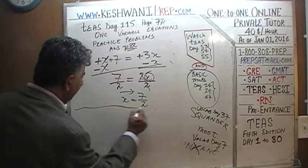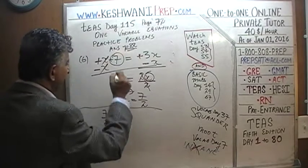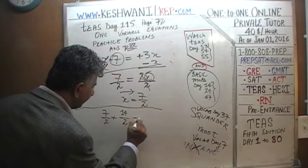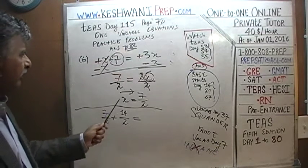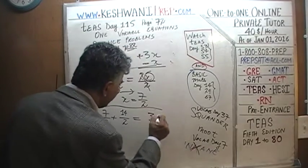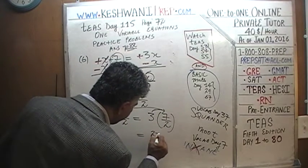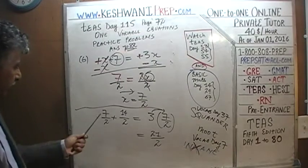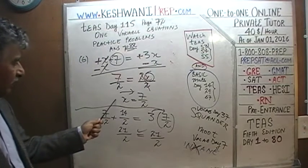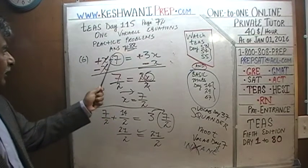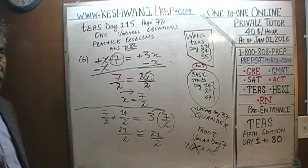Let's verify — x equals 7 halves. On the left side: x plus 7 is 7 halves plus 7, which we write as 14 halves. On the right side: 3 times 7 halves — 3 times 7 is 21 — so we get 21 halves. On the left side, 7 plus 14 is indeed 21 halves. It checks out — the answer is correct. x does equal 7 halves if x plus 7 equals positive 3x, but that was not the equation in the book.